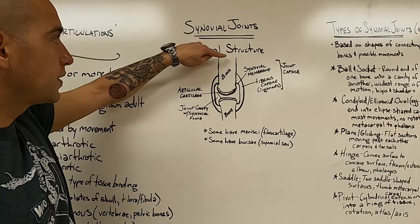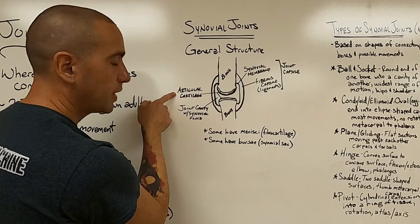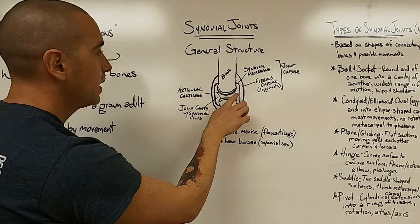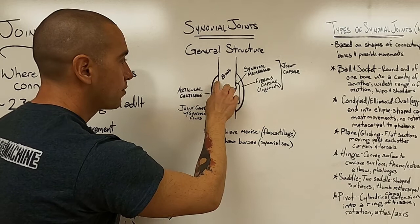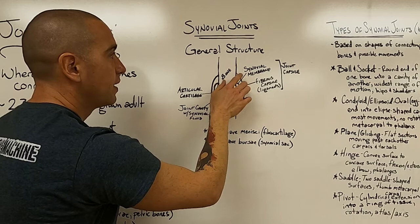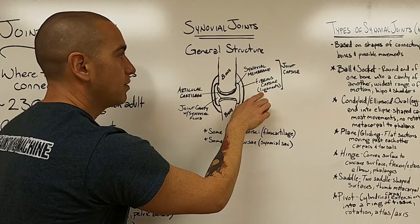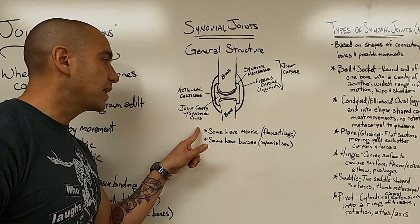So this is the general structure of a synovial joint. You'll see that there are two bones here. At the end of each bone is articular cartilage. Without this, the bones would grind together and wear away. Inside here, this is called the joint cavity. It's got a fluid called synovial fluid. That synovial fluid is made by a thin layer of tissue that surrounds the synovial cavity called the synovial membrane. And then outside of that thin synovial membrane is fibrous capsule, which is made of ligaments. These two things together make up the joint capsule.